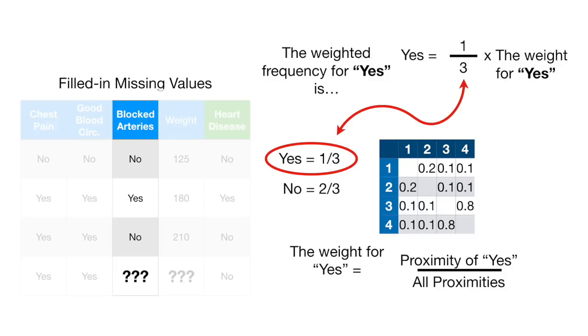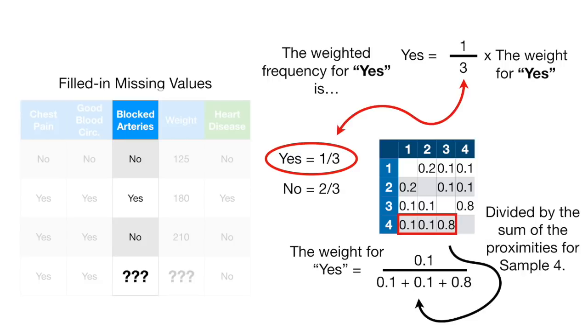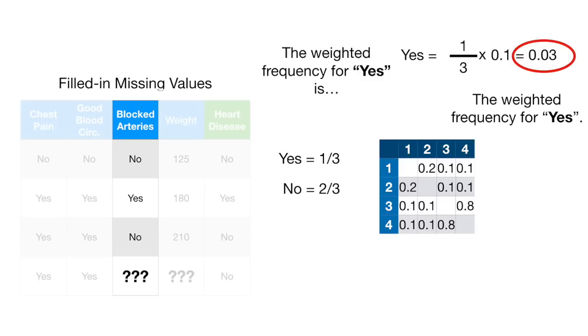The weight for yes equals the proximity of yes divided by all of the proximities. The proximity for yes is the proximity value for sample 2, the only one with yes. And we divide that by the sum of the proximities for sample 4, so the weight for yes is 0.1. Thus, the weighted frequency for yes is 0.03.